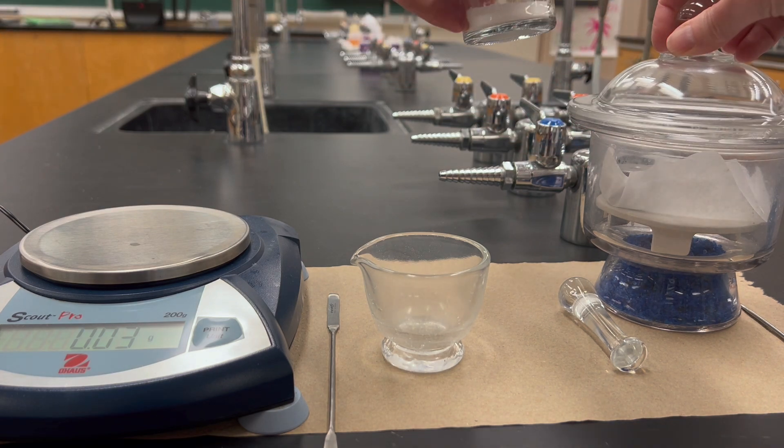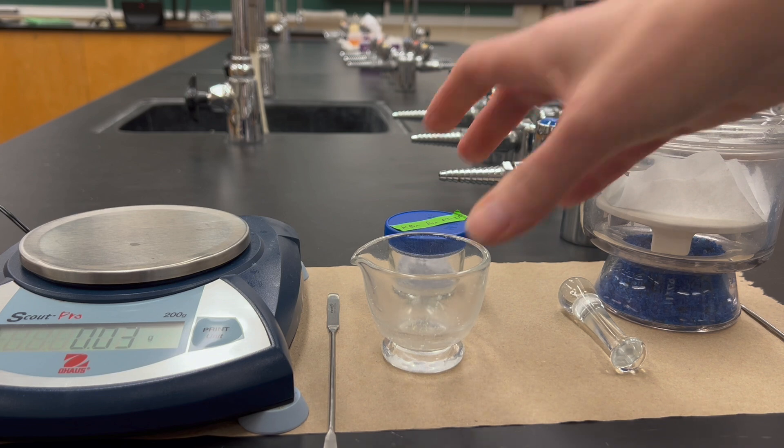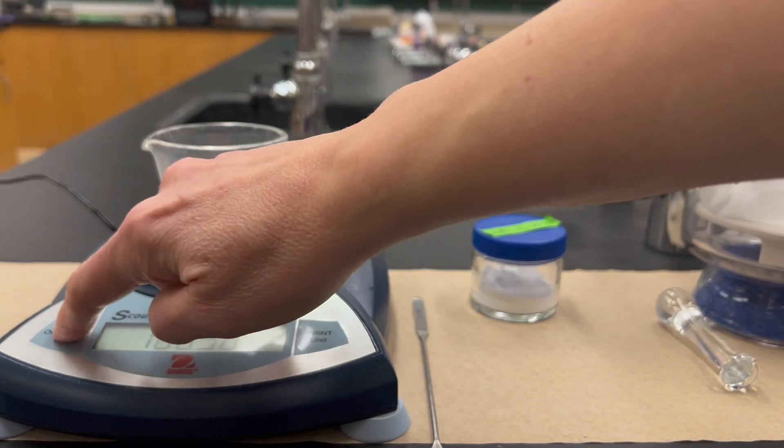Next, you want to get the KBR solid. We normally keep this in a desiccator because it's highly hygroscopic—it absorbs water from the air.